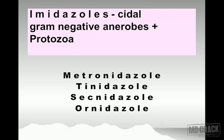Imidazoles are cidal agents — they can kill microorganisms. They are mainly useful against gram-negative anaerobes and protozoa. On the same slide, have a look at the names: metronidazole, tinidazole, and the newer ones — secnidazole and ornidazole — and many more are coming.